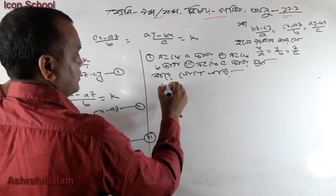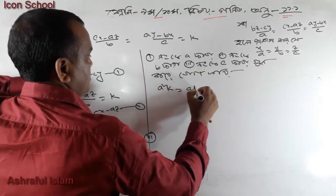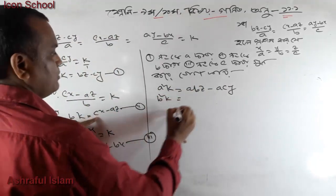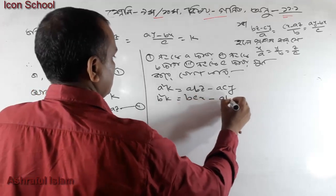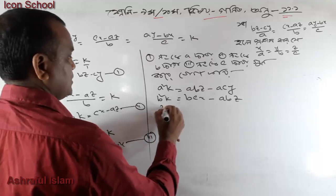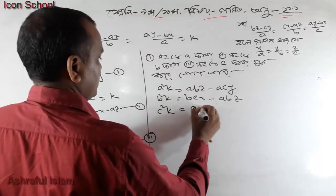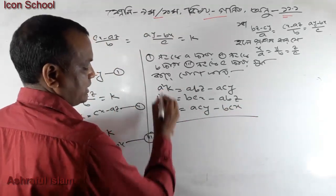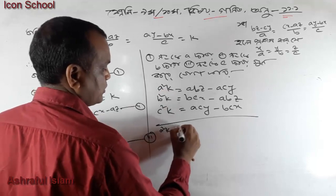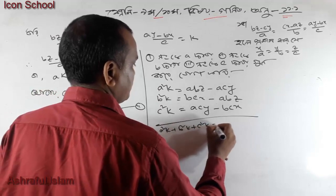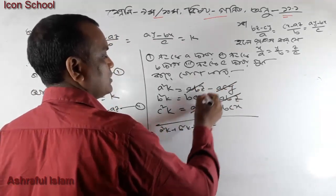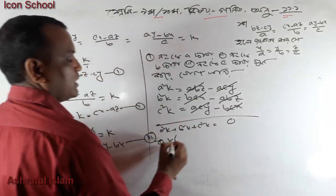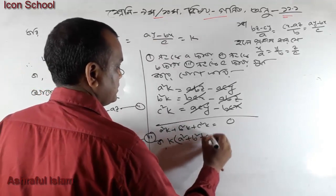We will add a squared·k minus ab·z minus ac·y. We will add b squared·k minus bc·x minus ab·z. We will add c squared·k minus ac·y minus bc·x. That means a squared·k plus b squared·k plus c squared·k. So a squared plus b squared plus c squared equals 0.